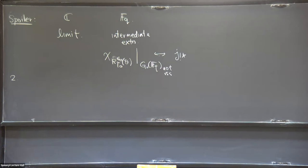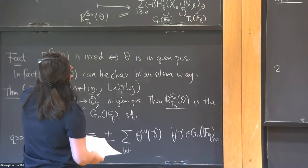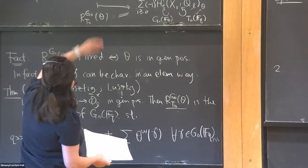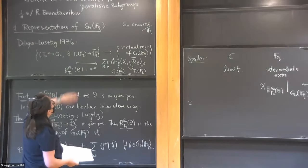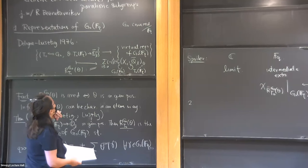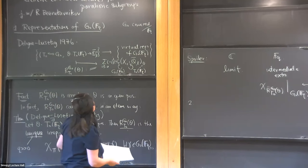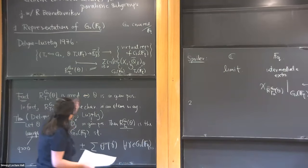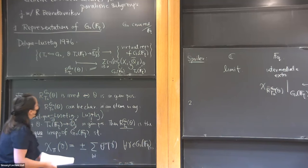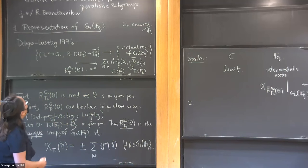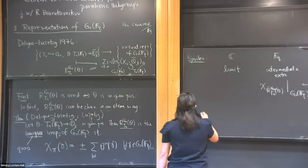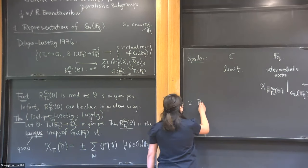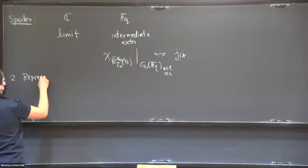Section two. There are many reasons to care about representations of groups like this. One reason is that these are closely related to supercuspidal representations. With that in mind, a natural object that comes up is parahoric subgroups of p-adic groups.